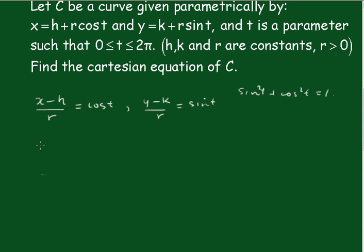Squaring both sides, we'll have x minus h all squared on r squared equals cos squared t. And we'll have y minus k all squared on r squared equals sin squared t.